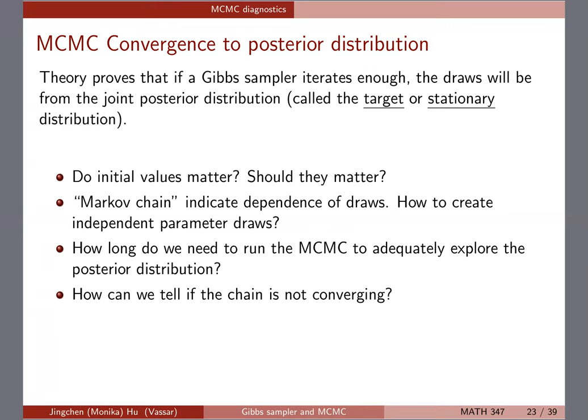A natural question is: how long should we run this? The model we're working with right now is pretty simple so it runs fast, but when models get complicated you may not have the resources to run it very long. Ultimately, as long as we run it long enough to adequately explore the posterior distribution, we can stop. We're now talking about how to evaluate whether you need to run it longer, and what diagnostics tell us whether the chain is converging.